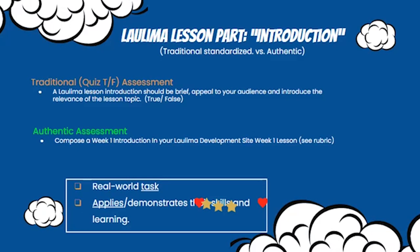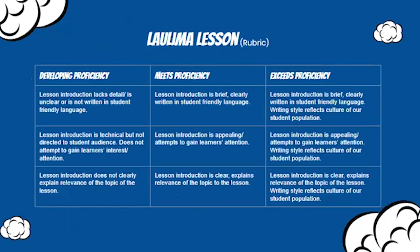So how do you measure that? That is one of the key points about authentic assessment versus traditional assessment. Traditional assessments tend to be quicker and more efficient to grade because they have standardized answers — sometimes you can even have an LMS like Laulima score the submissions — versus an authentic assessment, which might not have a specific correct answer because it's unique to each student. In those situations, you would want a rubric. I have an example here of what that rubric might look like.